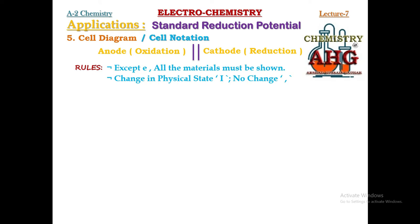Rule number three: whenever we construct a standard half-cell, we mostly use a standard electrode made up of platinum. Wherever platinum is present in a half-cell, it must always be shown. If platinum is part of the anode, it is written before the anode. If it is part of the cathode, it is written after the cathode in the cell diagram.